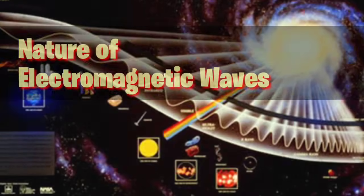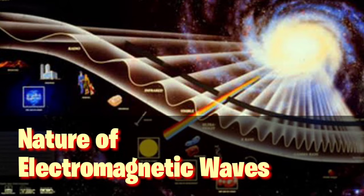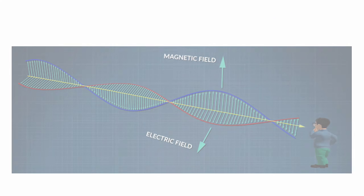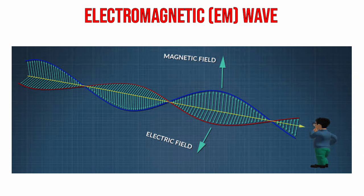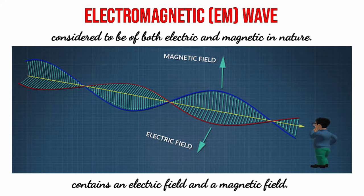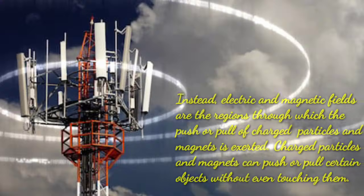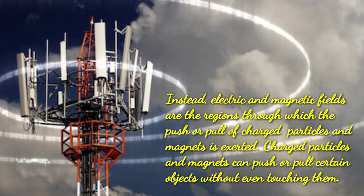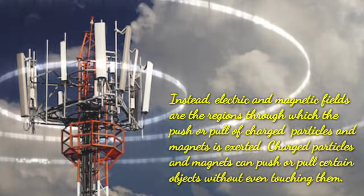Let's start with the nature of electromagnetic waves. As its name suggests, an electromagnetic wave or EM wave is considered to be both electric and magnetic in nature. An electromagnetic wave contains an electric field and a magnetic field. These fields are not made up of matter similar to what is in a football field. Instead, electric and magnetic fields are the regions through which the push or pull of charged particles and magnets is exerted. Charged particles and magnets can push or pull certain objects without even touching them.